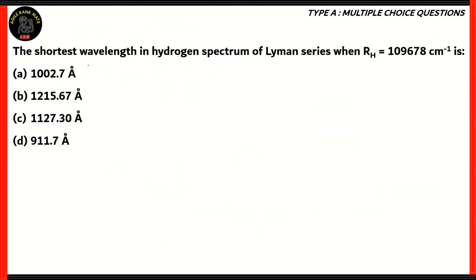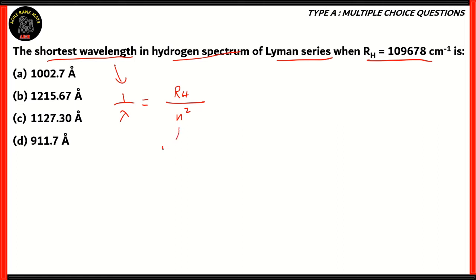Now let's look at the final question of this episode. The shortest wavelength in the hydrogen spectrum of the Lyman series, where Rh, or the Rydberg constant, is 109678 per centimeter, is: A) 100.7 angstroms, B) 1215.67 angstroms, C) 1127.3 angstroms, D) 911.7 angstroms. In order to find the wavelength for the hydrogen spectrum, we use the formula 1 by lambda equals the Rydberg constant divided by n squared, where n stands for the orbit number, or the principal quantum number.